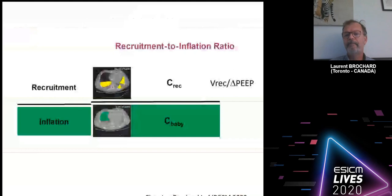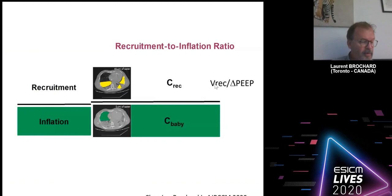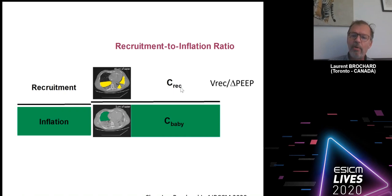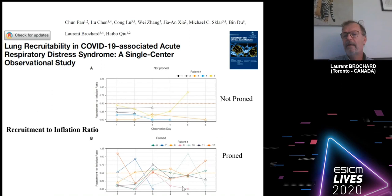These techniques will tell you the recruited volume — remember, the difference from the predicted volume — and you know the delta PEEP. This gives you what we call the compliance of the recruitable lung, and we take the ratio of this compliance to the compliance of the baby lung. The higher this ratio, the higher the lung recruitability.